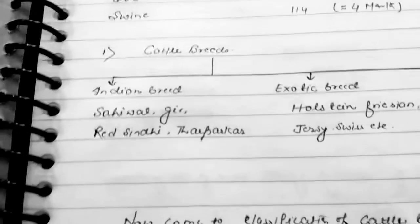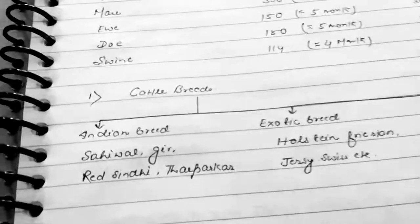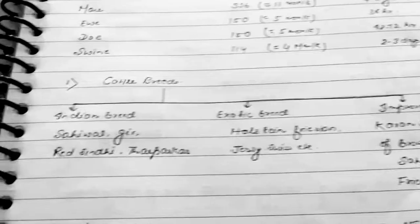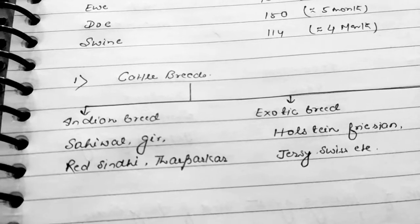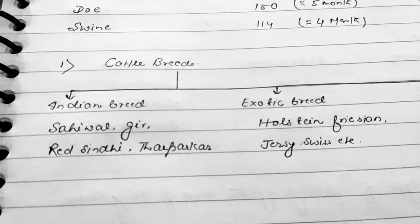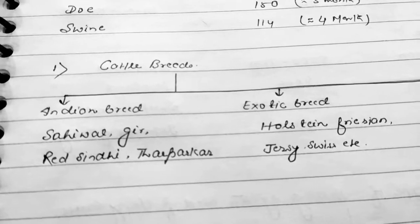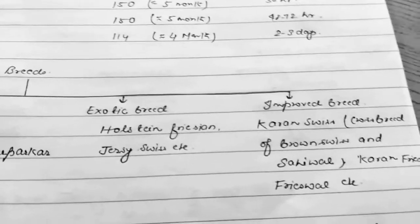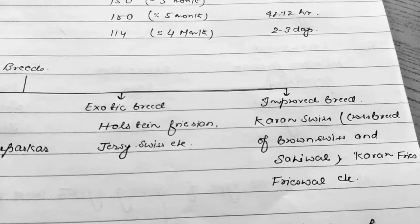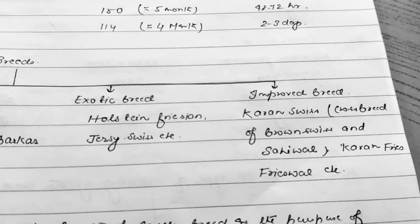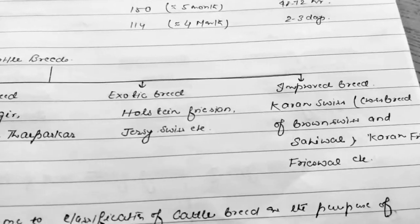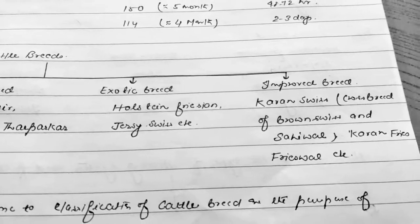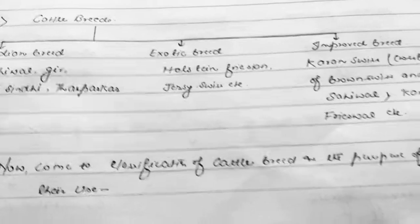Now let's start with breeds of cattle. There are basically three types: Indian breeds, exotic breeds, and improved breeds. Indian breeds include Sahiwal, Red Sindhi, and Thar Parker. Exotic breeds include Holstein Friesian, Jersey, and Brown Swiss. Improved breeds are Karan Swiss, which is a cross between Brown Swiss and Sahiwal, Karan Fries, and Frieswal — these improved breeds are obtained by crossing two different breeds.